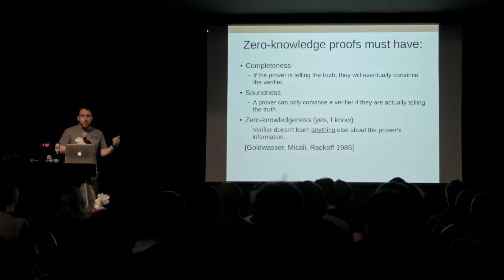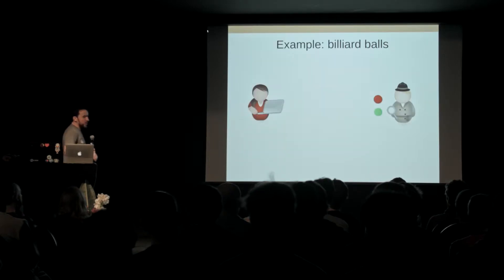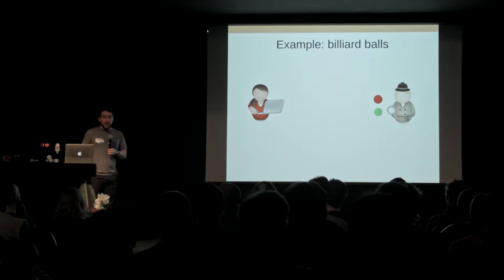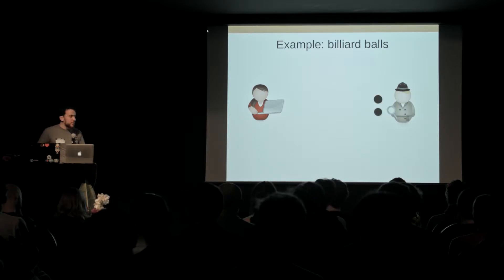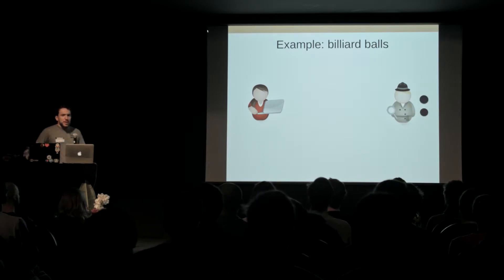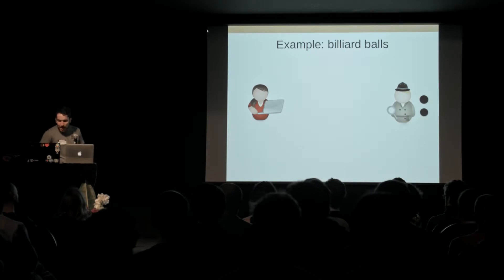So how do these things actually work in practice? The simplest example I can go through is a very simple one using billiard balls. Imagine my friend Alice has billiard balls and wants to prove to her friend Bob, who is colorblind, that the balls have different colors. Anyone who's not colorblind can trivially see that, but to Bob they look the same — just random spheres. So we can design a protocol where Bob takes the balls, puts them behind his back, and shuffles them. With 50% probability he flips a coin — if heads he swaps them, if tails he doesn't — and brings them back out.